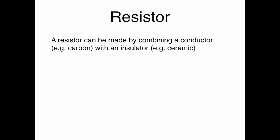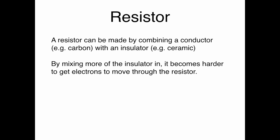A resistor is a bad wire, in a sense. It's a wire, but it takes more energy to get the electrons to travel through it. Resistors can be made by combining a conductor — for example, carbon — with an insulator — for example, ceramic. By mixing more of the insulator in, it becomes harder to get electrons to move through the resistor. So by adding more of the insulator, you increase the resistance.